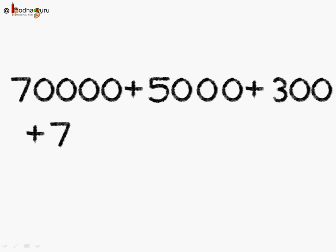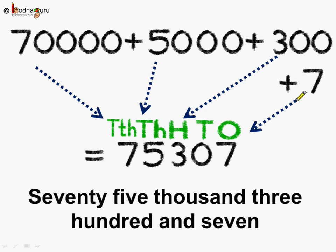Let's change it to standard form starting from the ones place. There are 7 ones. How many tens? 0 tens, so put 0 at the tens place. Then 3 hundreds, so 3 goes at the hundreds place. Then thousands — put 5 at the thousands place. Lastly, how many ten-thousands? 7 ten-thousands, so 7 goes to the ten-thousands place. What do we get? 75,307.